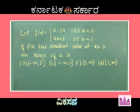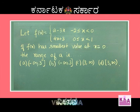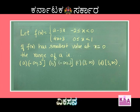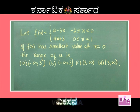Dear students, look at the question. f(x) = (a − 3x) for −2 ≤ x < 0, and (4x + 3) for 0 ≤ x < 1. f(x) has smallest value at x = 0. Then the range of a is: (−∞, 3), (−∞, 3], (3, ∞), or [3, ∞).